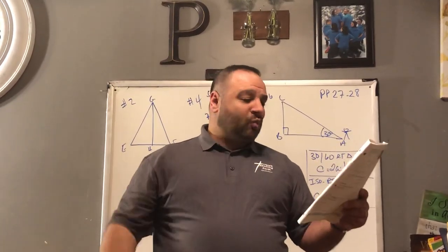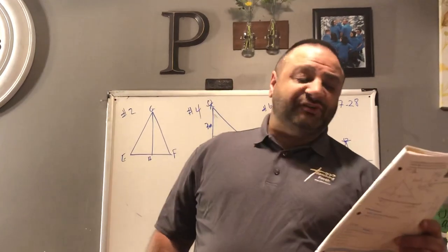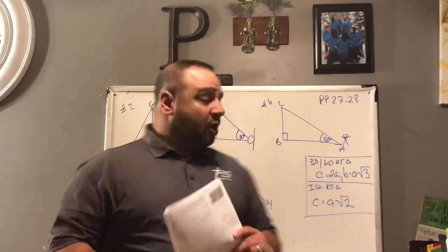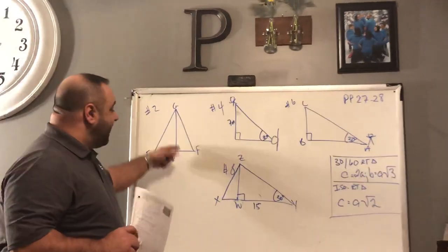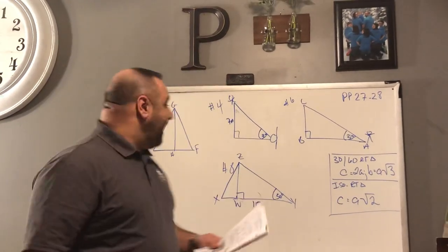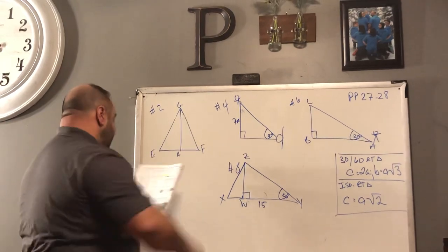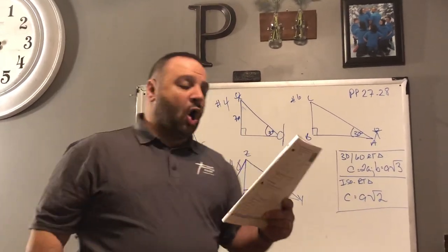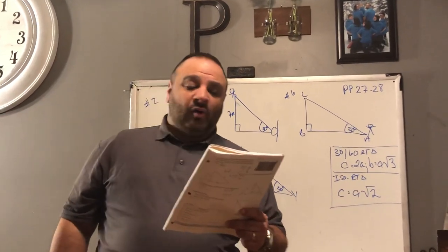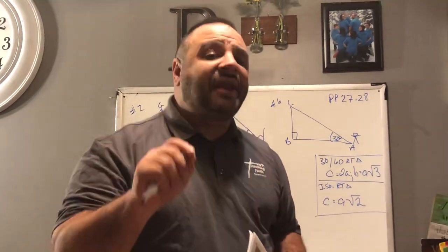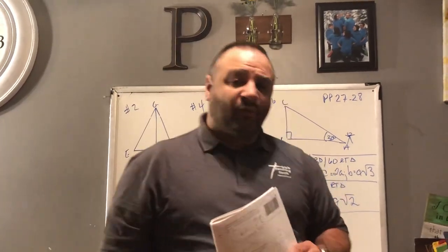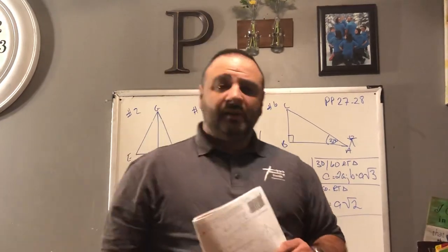Good morning everyone. Let's look at number two. The altitude GH of equilateral triangle EFG bisects angle EGF. How long is GH if EG is 10? Now there's a clue in this one — what kind of triangle do we have? We have an equilateral triangle. The definition of an equilateral triangle is a triangle with three congruent sides.